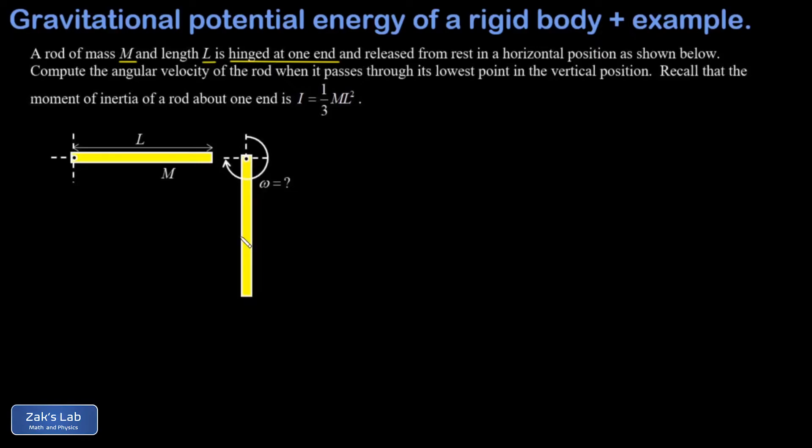And I want to compute the angular velocity of the rod when it passes through the lowest point, and that's when the rod is in the vertical position in the second picture. And we get a reminder here that the moment of inertia of a rod rotated about one end is one third ML squared. So this is a pure rotation problem and we can figure out the final angular velocity by using energy conservation.